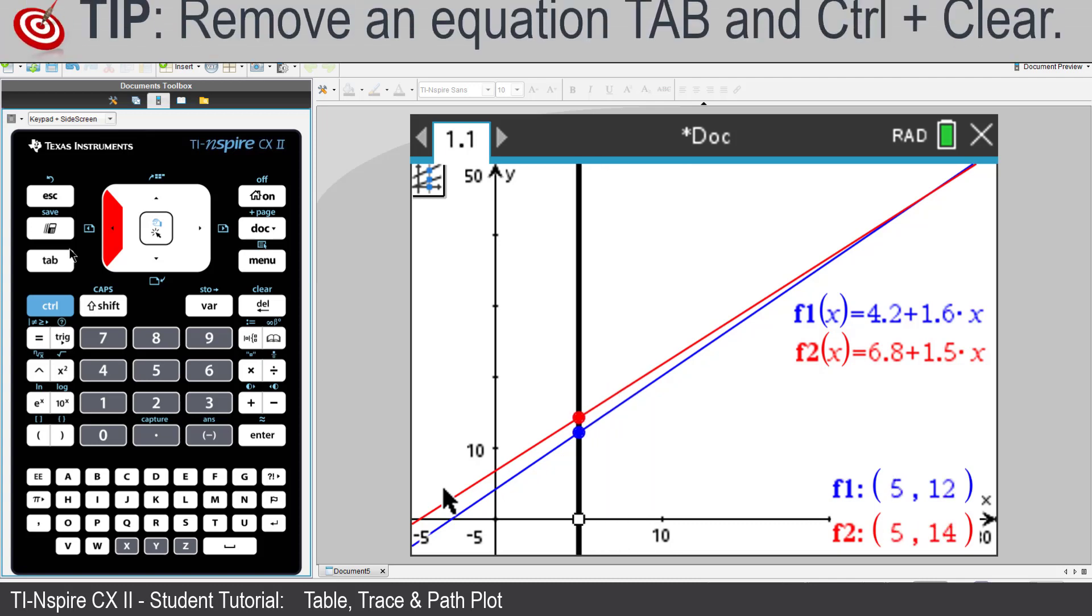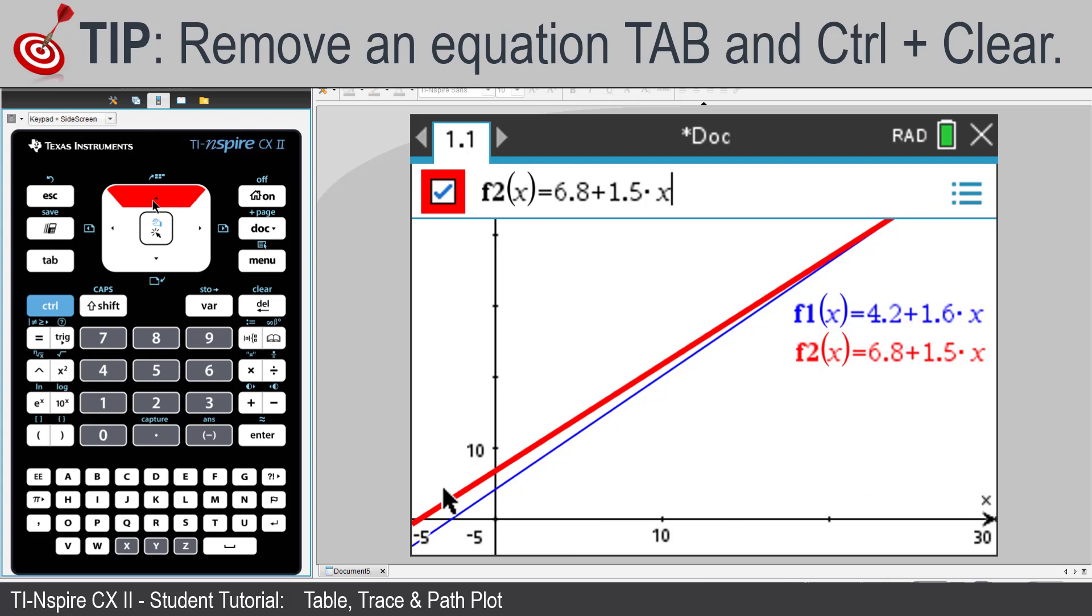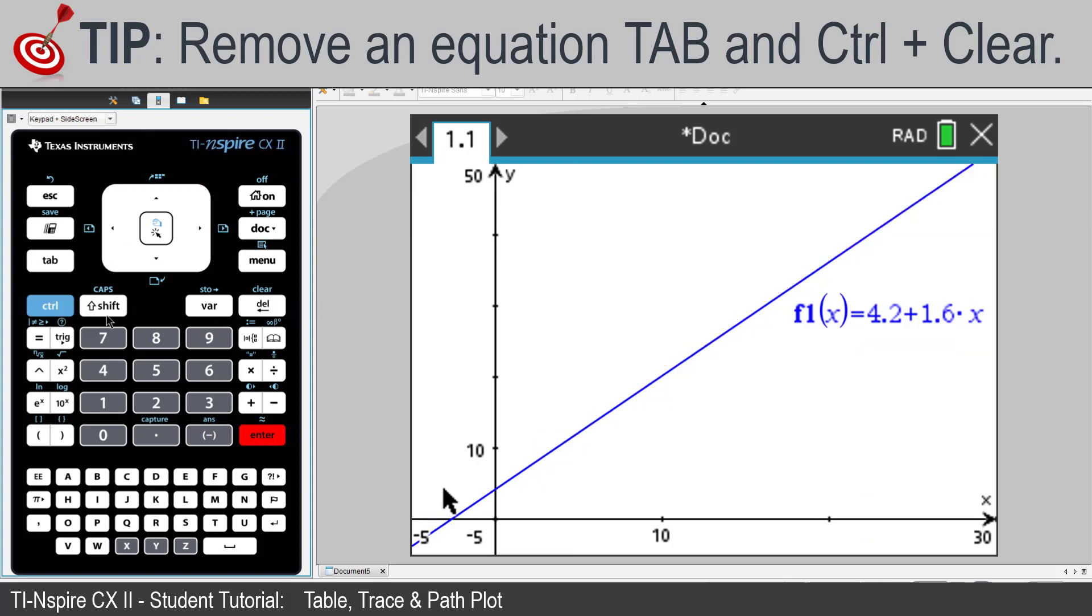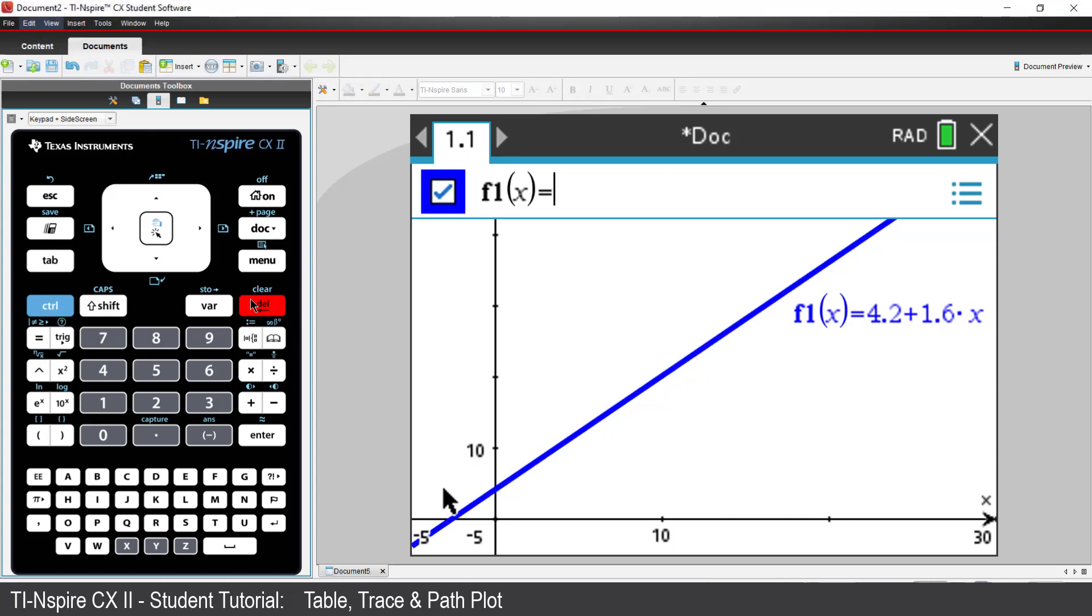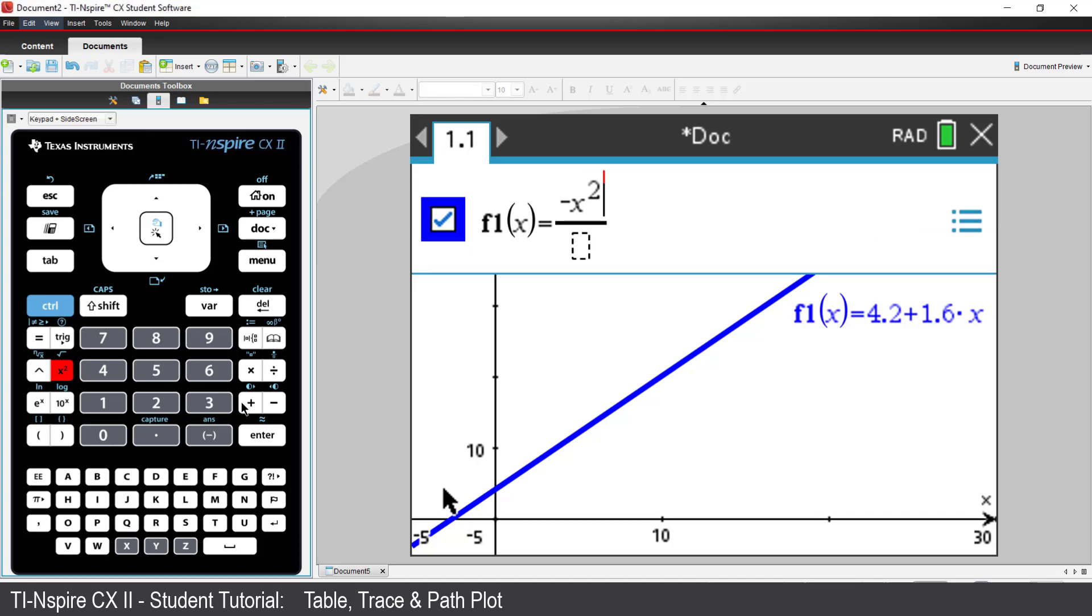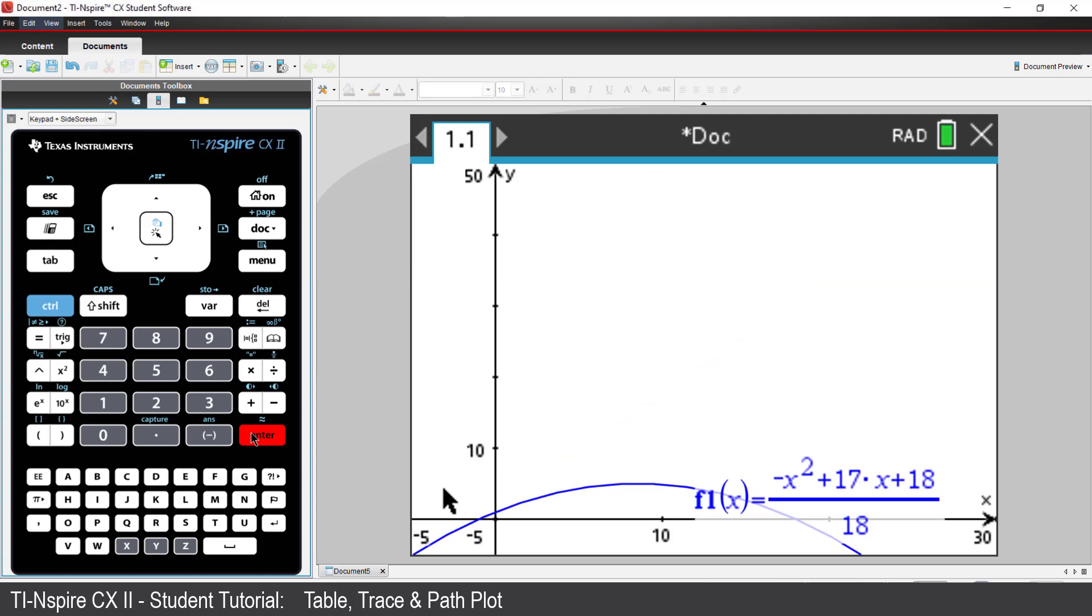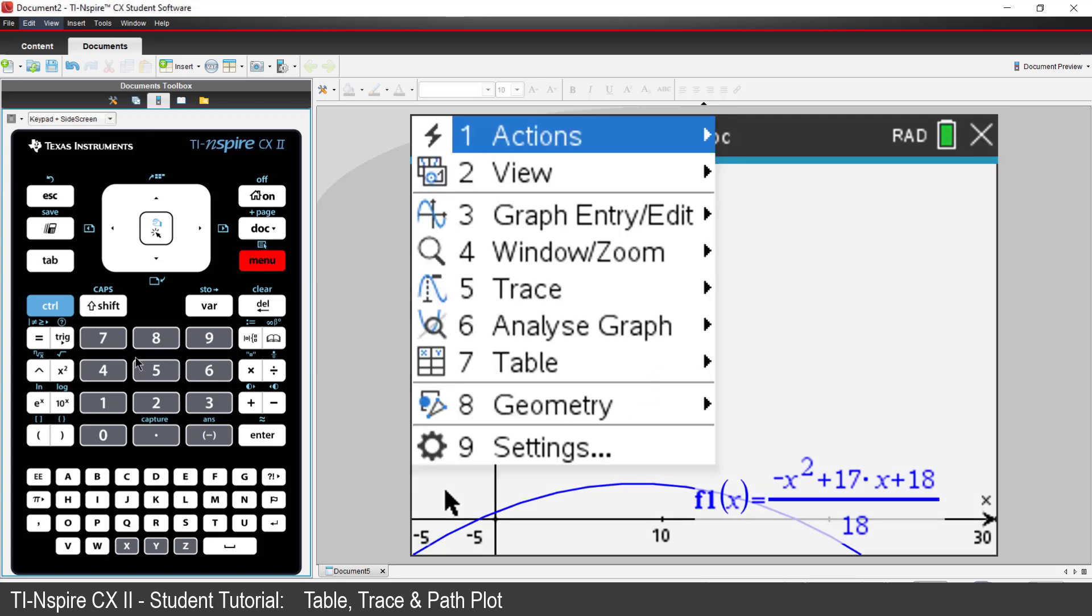Now let's move away from taxi fares and consider a projectile. Suppose the projectile has the equation negative x squared plus 17x plus 18 all over 18. The projectile's path is in the first quadrant.